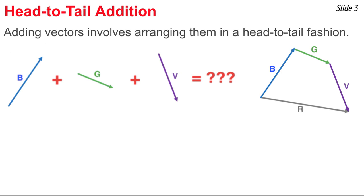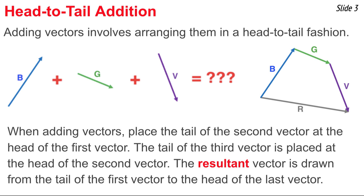Whenever we graphically add vectors, we utilize the head-to-tail method of vector addition. If we have to add vectors B, G, and V, we begin by first drawing vector B, then we add G to it, placing the tail of vector G at the arrowhead of vector B. Once G is drawn, we draw vector V, placing its tail at the arrowhead of vector G. Once all vectors have been drawn, we draw the resultant — the answer to B plus G plus V — from the tail of the first vector to the arrowhead of the last vector.